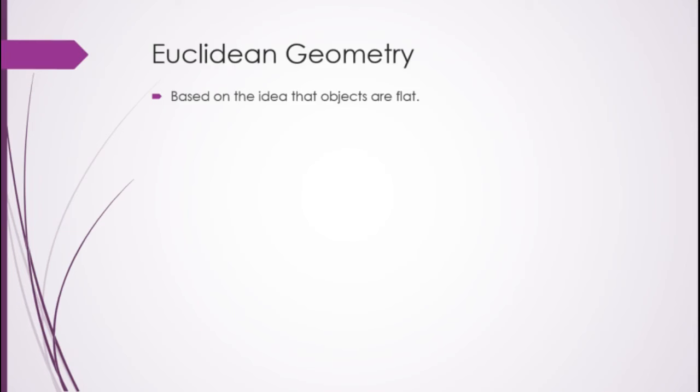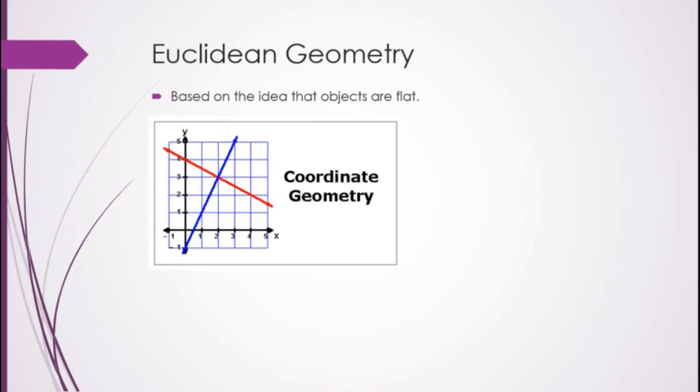Euclidean geometry is the geometry that we've always been using. It's based on the idea that we're going to work on a flat surface.